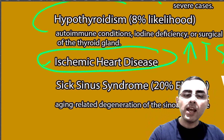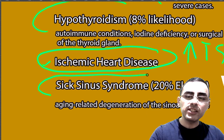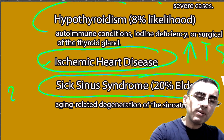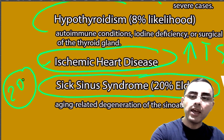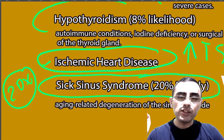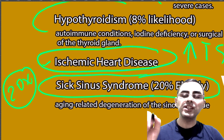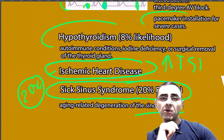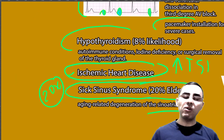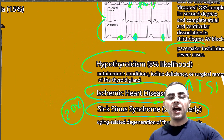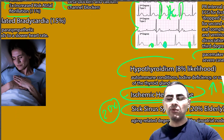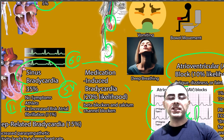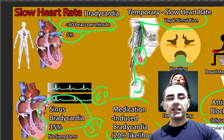Sick sinus syndrome is common among elderly people — 20% of elderly people have it. It means age-related degeneration of the sinoatrial node, causing a slow heart rate. So if a person is 80 years old and presents with a slow heart rate and no other symptoms, it is sick sinus syndrome in many cases.